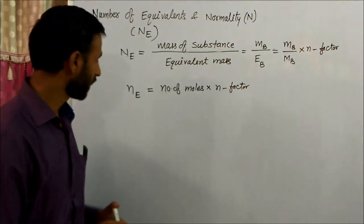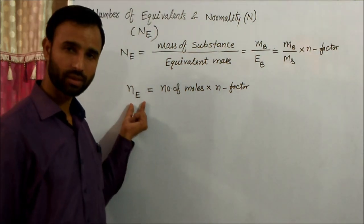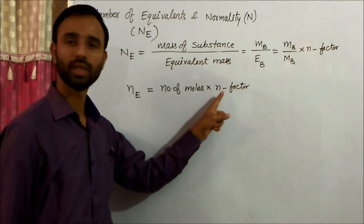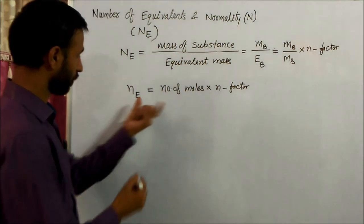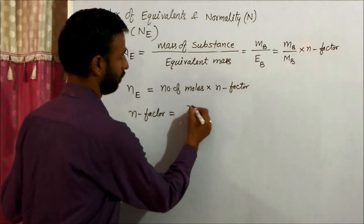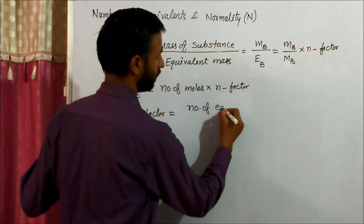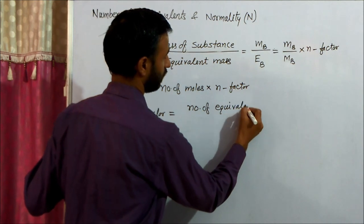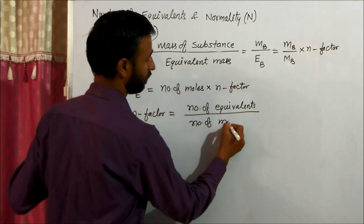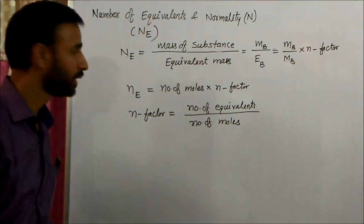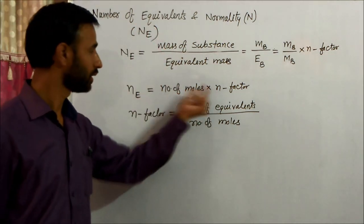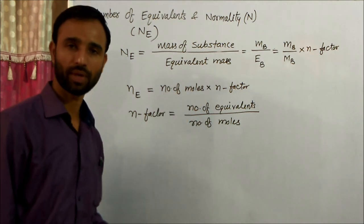We can calculate number of equivalents using the formula: number of moles into N factor. From here, N factor is equal to number of equivalents divided by number of moles. So number of equivalents is equal to number of moles into N factor.